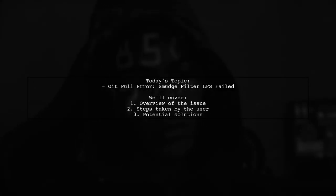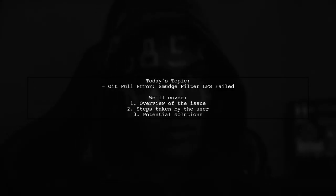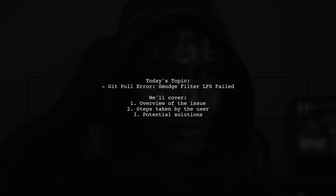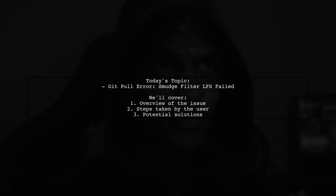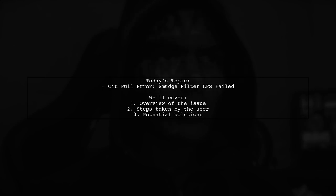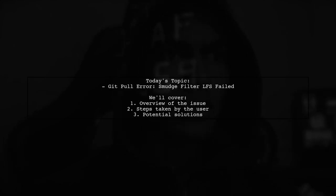Welcome to our tech troubleshooting video. Today we're tackling a frustrating issue that many developers encounter when working with Git and Git LFS. Our viewer is trying to pull code from GitHub but is met with an error message that reads 'smudge filter LFS failed.' Let's break down the situation and see how we can help resolve this problem.